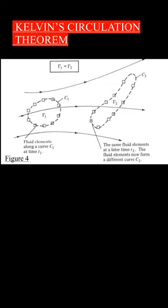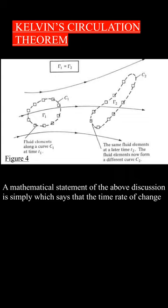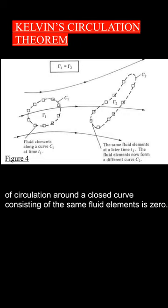For the conditions stated above, we can readily show that RO1 equals RO2. A mathematical statement of the above discussion is simply which says that the time rate of change of circulation around a closed curve consisting of the same fluid elements is 0.